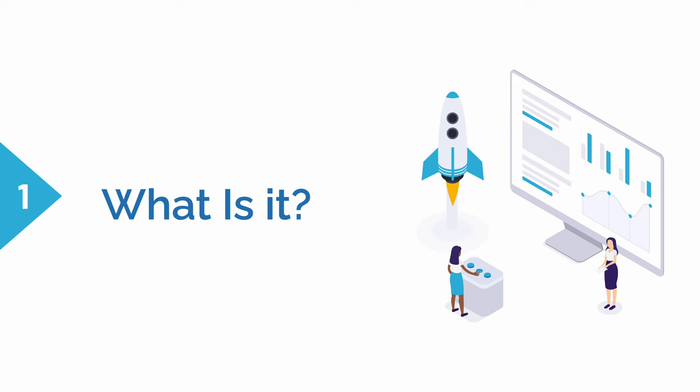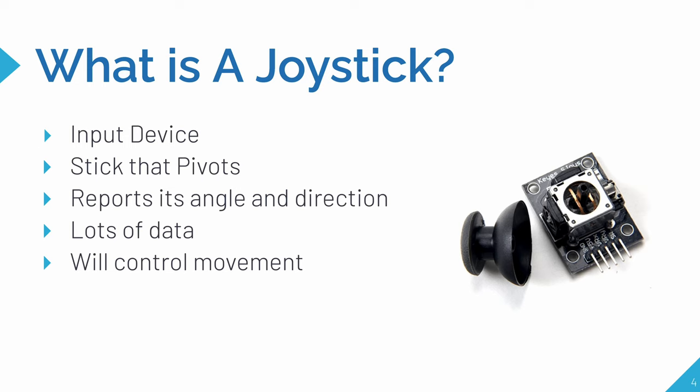So first, what is it? A joystick is an input device, which means you can move it around and control the data that it sends to the Raspberry Pi. It consists of a stick that pivots on a base. This is a PS2 joystick — same design as a PS2 joystick — and this joystick will report its angle and direction.